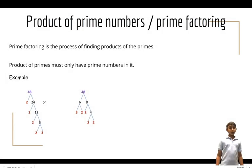Now we're on to the product of primes, also known as prime factoring. Here are some notes to make. Prime factoring is the process of finding the product of primes. A product of primes must only have prime numbers in it. Here are some examples. Ready, let's go.